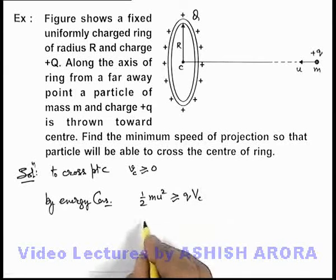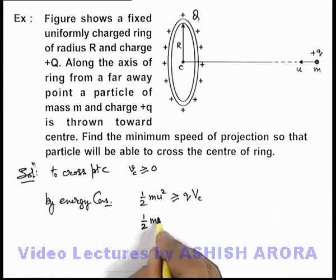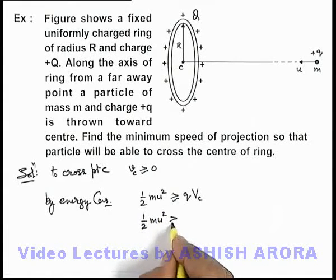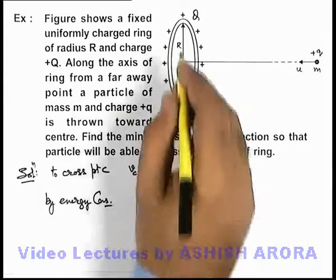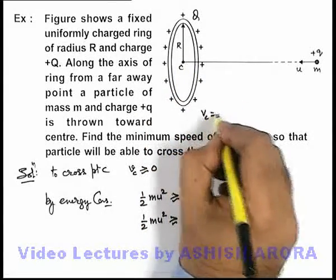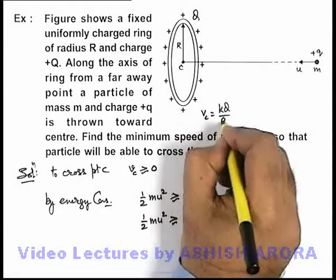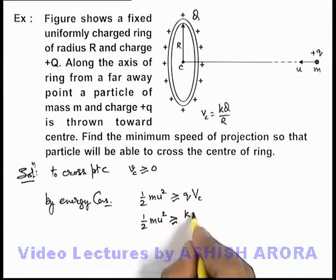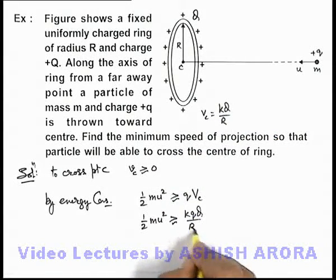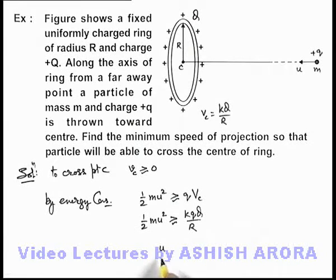So in this situation if we substitute the value of potential at the center of the ring, it can be given by Vc = kQ/R. If we substitute the value it'll be kQq/R. And on solving, the speed u we're getting is more than or approximately equal to the square root of 2kQq/mR. That'll be the answer to this problem.